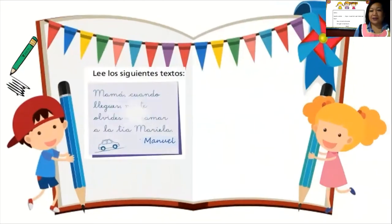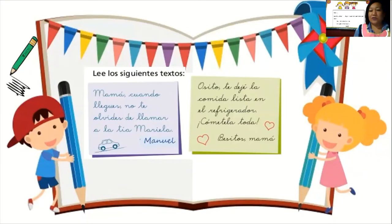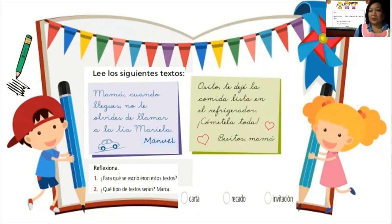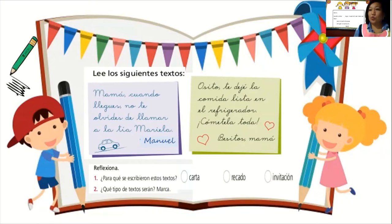Vamos a empezar leyendo estos siguientes textos. El primero dice: Mamá, cuando llegues, no te olvides de llamar a la tía Mariel. Manuel. El siguiente dice: Osito, te dejé la comida lista en el refrigerador. Cómetela toda. Besitos, mamá. Entonces, ¿para qué se escribieron estos textos? Para dar un aviso, un recado, dejar una nota a alguien con algo importante. ¿Y qué tipo de textos serán? Es un recado, que lo podemos llamar también una nota: un pequeño aviso, un pequeño mensaje que le dejamos a alguien. De repente nos olvidamos de decir algo personalmente, pero ya sabemos que va a llegar y va a poder leer esa nota para hacer el recordatorio sobre algo que olvidamos decirle personalmente.